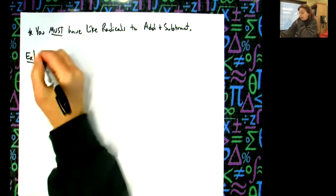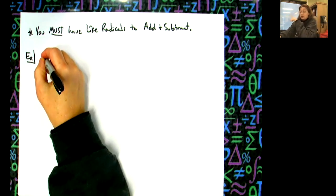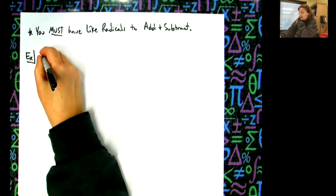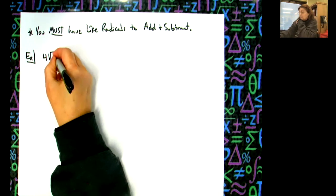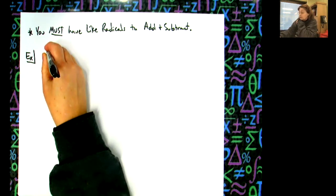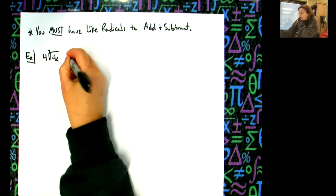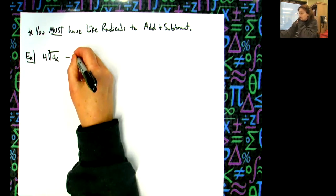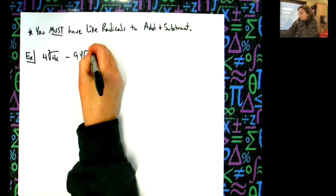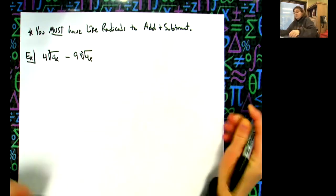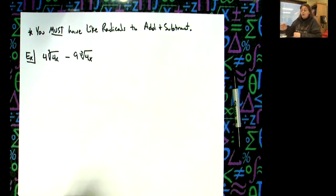Let's start with a simple one. Let's say I had 4∛(4x) minus 9∛(4x). I look at my radicals - this is a cube root of 4x, this is a cube root of 4x, those are like radicals.